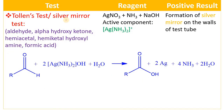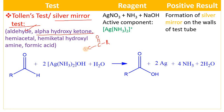Tollen's test is also called the silver mirror test. This test is used for the identification of aldehydes, not for ketones. However, alpha-hydroxy ketones can also be identified. If you take a ketone with an OH at the alpha position, that is an alpha-hydroxy ketone — this is the keto group and this is the alpha carbon bearing a hydroxy group — these types of compounds can exhibit Tollen's test.